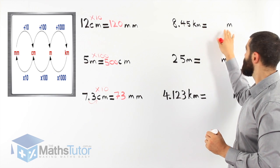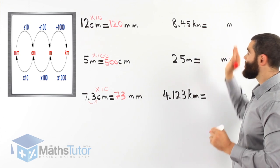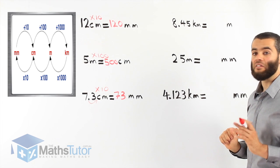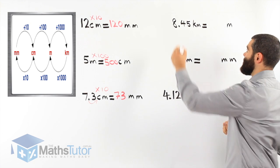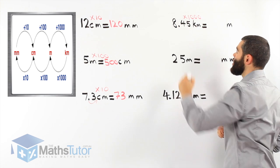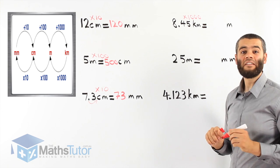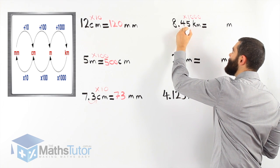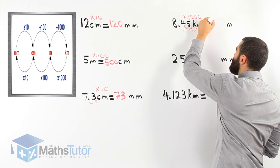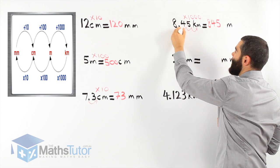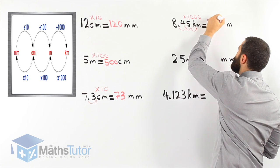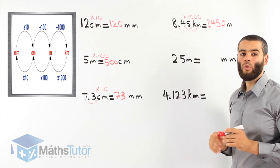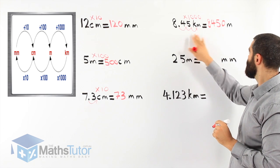Now we're going from kilometres to metres: 8.45 kilometres to metres. It's always important to see which unit you're going from. Kilometres to metres — we multiply by 1,000. 8.45 times 1,000: a thousand has three zeros, so we move the decimal to the right three times. One, two, three. That gives us 8,450 metres. So 8,450 metres is exactly the same as 8.45 kilometres.